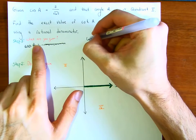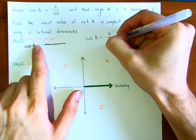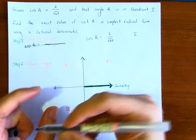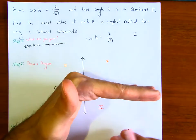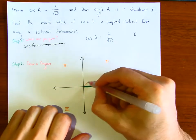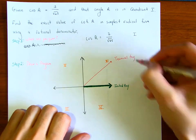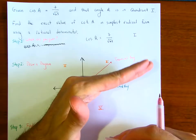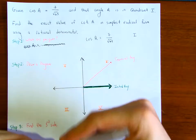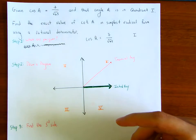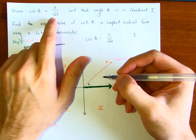Step 1: what are you given? You're given that cosine of angle a is 7 over square root of 65, and you know you're in the first quadrant. Notice that if we have our initial ray, we know that angle a is somewhere in the first quadrant. The terminal ray could be anywhere — let's just say it's here. So we know the terminal ray is in the first quadrant, and cosine of angle a equals 7 over square root of 65.